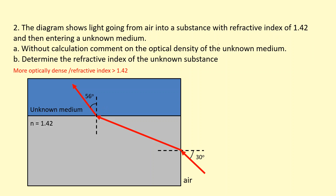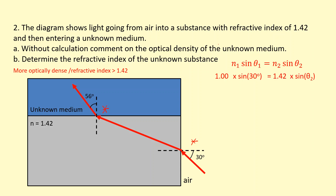Part B: determine the refractive index of the unknown substance. We can't apply Snell's law at the second boundary yet because we don't have the angle of incidence there. So we start at the first boundary. Using Snell's law: n1 is air so 1, angle of incidence is 30 degrees, and n2 is the gray medium with refractive index 1.42. Rearranging and taking sine inverse, we get an angle of refraction of 20.62 degrees.